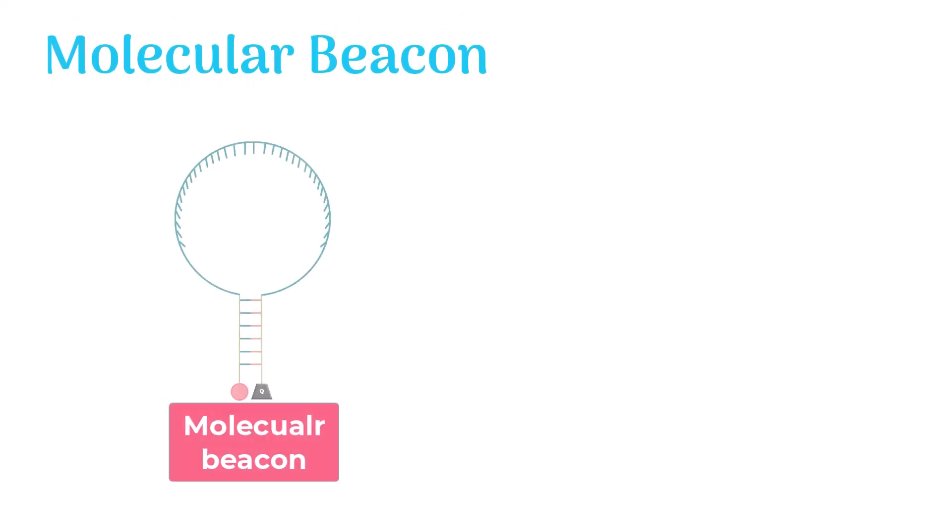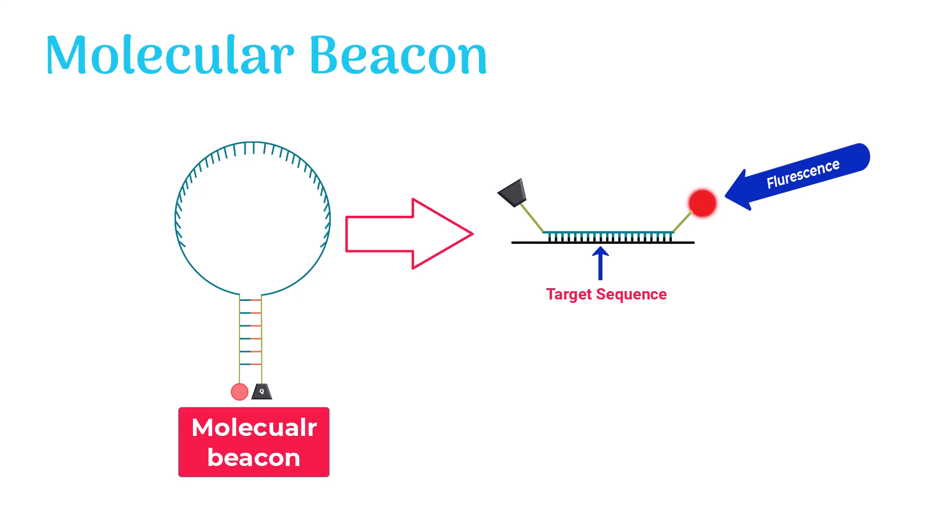Molecular beacon is a probe that causes fluorescence when it binds to its target sequence. The structure of a molecular beacon contains three main parts: a reporter, quencher, and a loop.